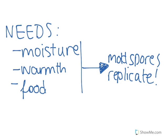Mold also has to be warm — by warm, I mean around room temperature. That's why if you refrigerate your food, mold usually doesn't grow for a very, very long time. But if you leave your food out for a long time, such as bread or fruit, mold starts to grow, and you get those kind of furry-looking spores replicating all over it.